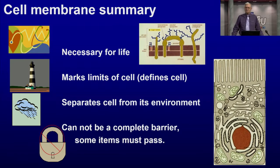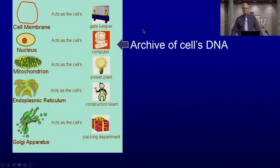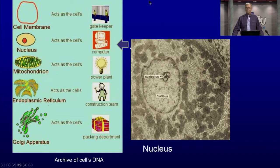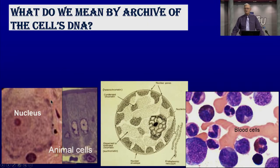A cell membrane cannot be a total lock — certain things have to go through. We need sugars, amino acids, nutrients, and we need to get waste out. That's part of its function: to regulate what comes in and goes out. In addition to the cell membrane, we have the nucleus. The nucleus is the archive of the cell's DNA — like a library archive, it is memory. The nucleus remembers what type of cell this is and stores all the DNA that every cell in the body has.